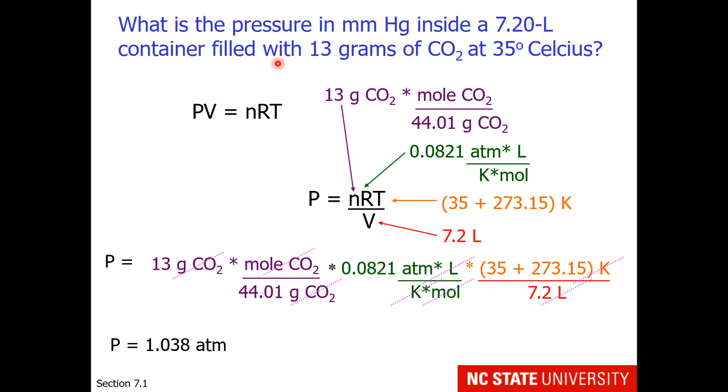But the question asked me for the pressure in units of millimeters of mercury. So I'll need to use a conversion factor that there are 760 millimeters of mercury in one atmosphere. This will give me a pressure of 789 millimeters of mercury.